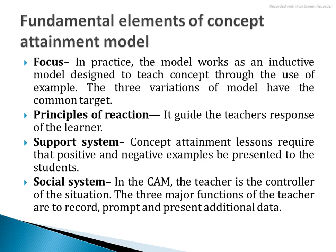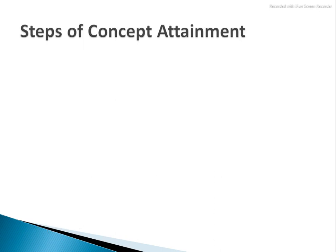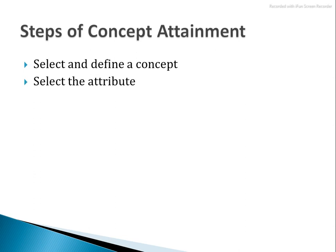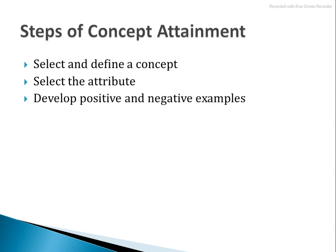The three major functions of the teacher are: to record where the child needs help, to prompt, and to present additional data. You have to choose whether to change the number of examples or prompt. Next are the steps of concept attainment. First, select and define a concept — you have to select a concept which has attributes. Then select the attributes; you have to find attributes that relate to the concept, as well as attributes that don't belong — those are the no-category attributes. Next, develop positive and negative examples to prove the attributes. Then introduce the process to the students so they understand how to write examples through attributes.